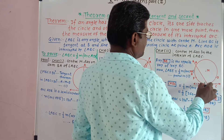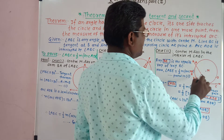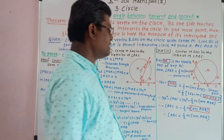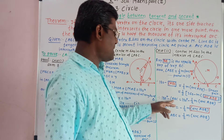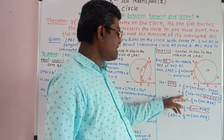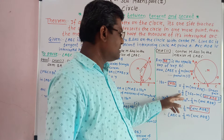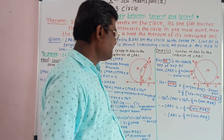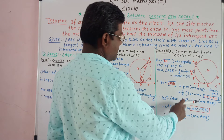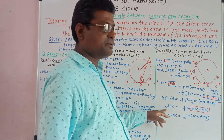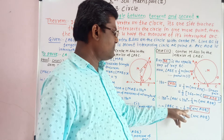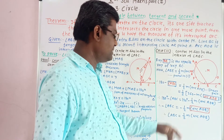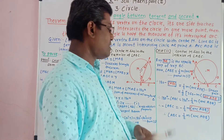Major of arc AFC = 360° − major of arc ADB. Therefore, 180° − angle ABC = 1/2 × (360° − major of arc ADB) = 180° − 1/2 × major of arc ADB. The 180° cancels from both sides, leaving −angle ABC = −1/2 × major of arc ADB. Therefore, angle ABC = 1/2 × major of arc ADB.